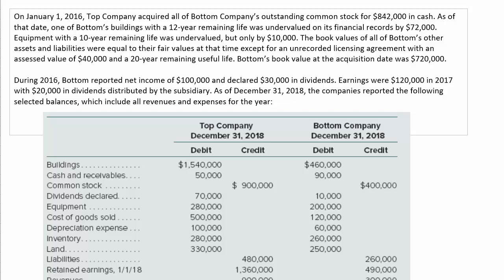Let's explore this equity accounting problem. I'll read the first two paragraphs you see on the screen. On January 1, 2016, Top Company acquired all of Bottom Company's outstanding common stock for $842,000 in cash.